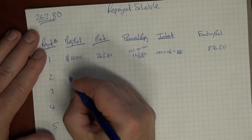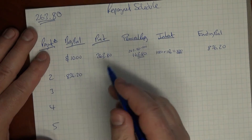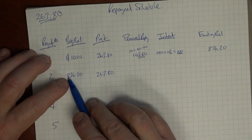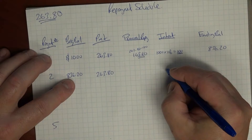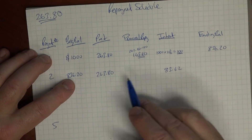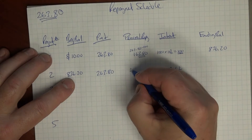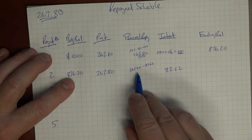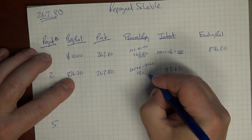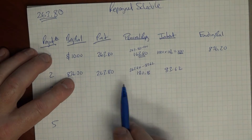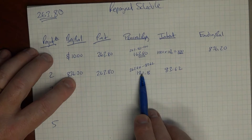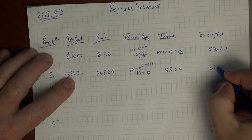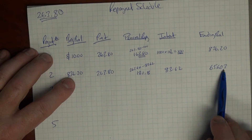In year two, the beginning balance is $836.20. We make a payment of $263.80 again, since that's our consistent payment. The interest on $836.20 at 10% is $83.62. Taking $263.80 minus $83.62, the principal repayment is $180.18. We subtract $180.18 from the beginning balance of $836.20, giving an ending balance of $656.03. So at the end of year two, we owe $656.03 on our loan.